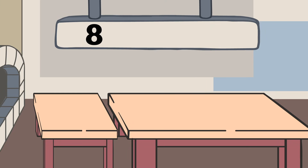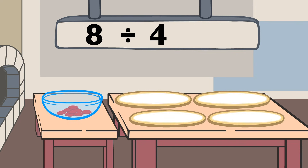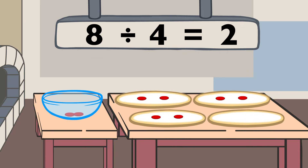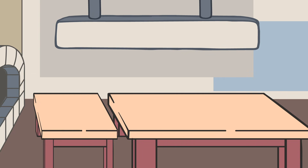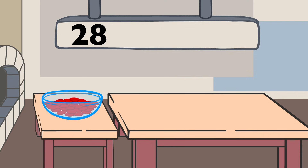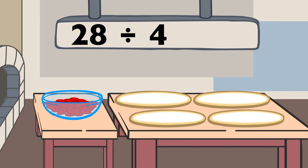Eight divided by four equals two. Twenty-eight divided by four equals four.